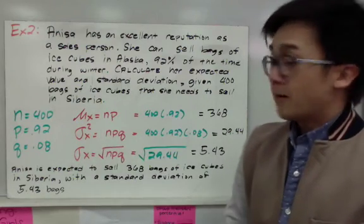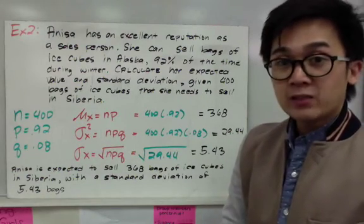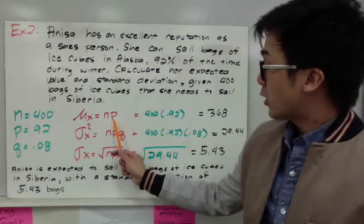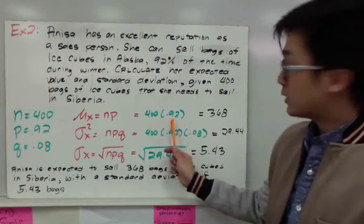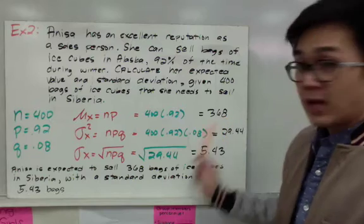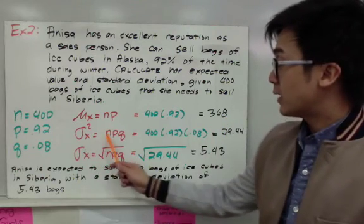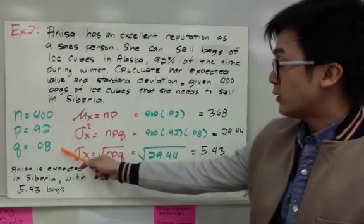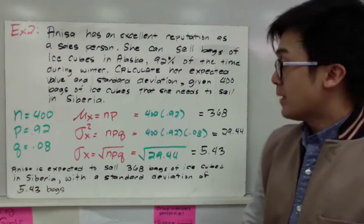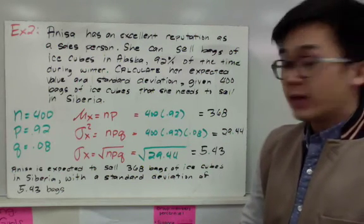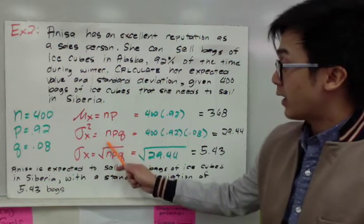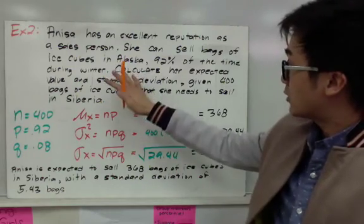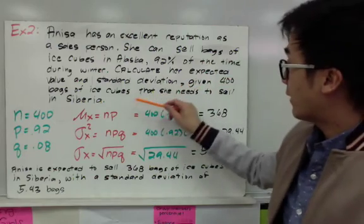To find its expected value, we're simply finding the mean of the distribution given by the formula n times p. So 400 times 0.92 gives you 368 for the expected value. Now for the variance, it's simply n times p times q. Multiply 400 times 0.92 times 0.08 and you'll get 29.44. Since we are asked to find the standard deviation and not the variance, we take the square root of 29.44 to get 5.43.